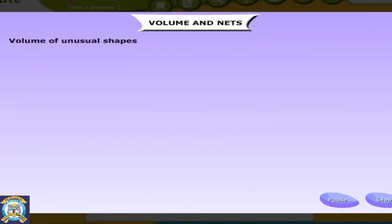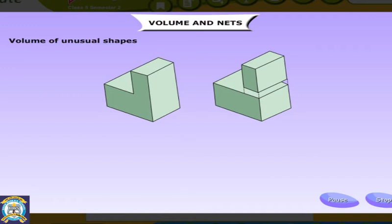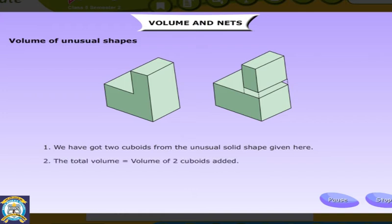Volume of Unusual Shapes. Let us now find volumes of some unusual shapes which are a combination of cubes and cuboids. We have got two cuboids from the unusual solid shape given here. The total volume is equal to volume of two cuboids added.